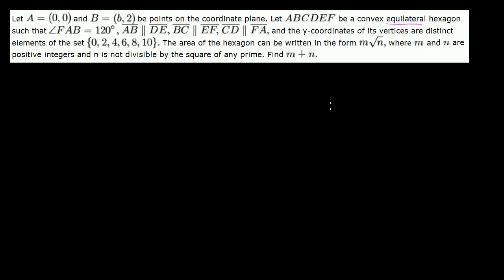Convex means that it's not concave. A concave hexagon would have a side pushed inward — that would be a concave hexagon, so it's going to be 'popped out.' And all the sides are going to be equal, so it's an equilateral hexagon. They're not telling us it's a regular hexagon, so we don't know that all of the angles are going to be the same, but all the sides will be the same.